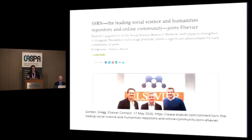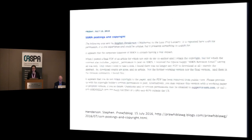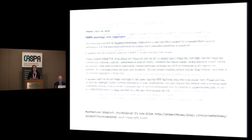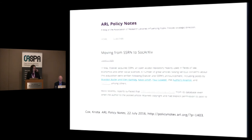Elsevier unsurprisingly argued that this kind of integration would bring great benefits to authors — enabling them to move seamlessly and fluidly from research to drafting to journal submission. But many researchers expressed concerns about what such all-encompassing lock-in might do to their community and the values it espoused. This concern was borne out a couple of months later when SSRN users began reporting that shared materials perceived not to be in compliance with a newly articulated copyright transfer policy were being removed from the network.